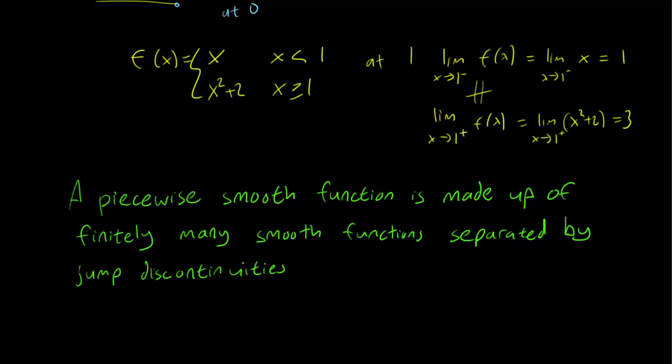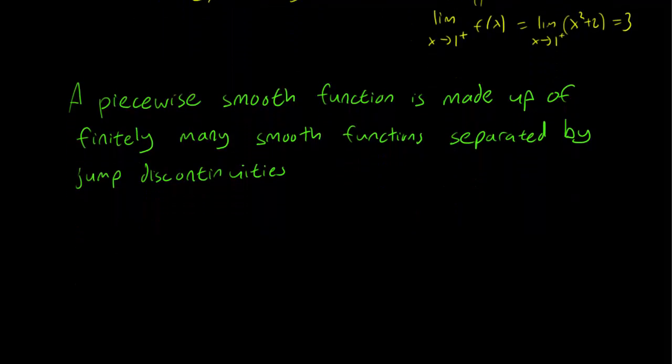Finally, this is the main definition of this section. A piecewise smooth function is one that is made up of finitely many smooth functions separated by these jump discontinuities.